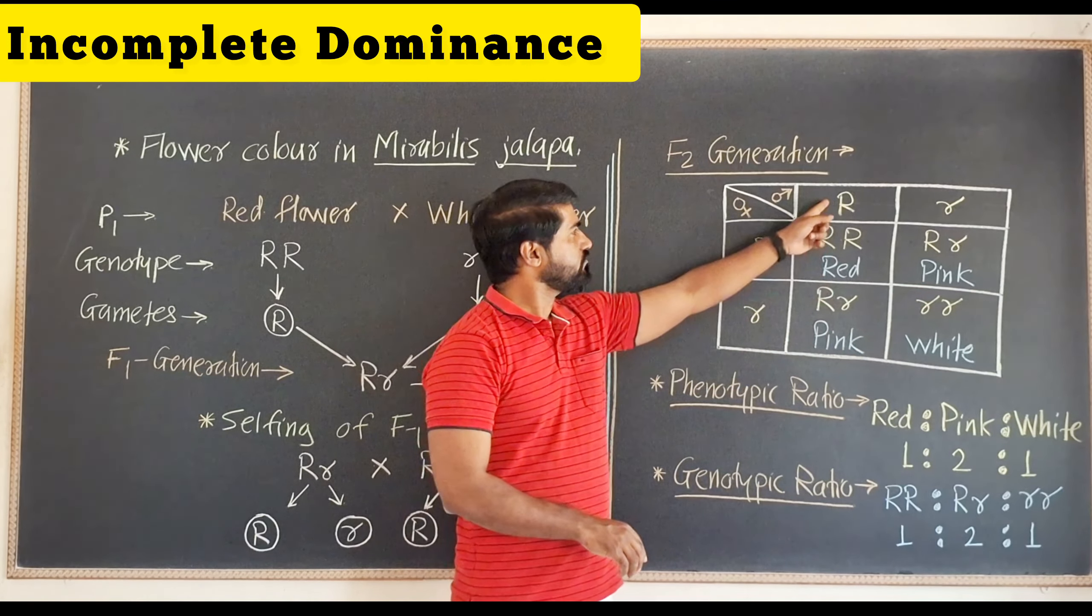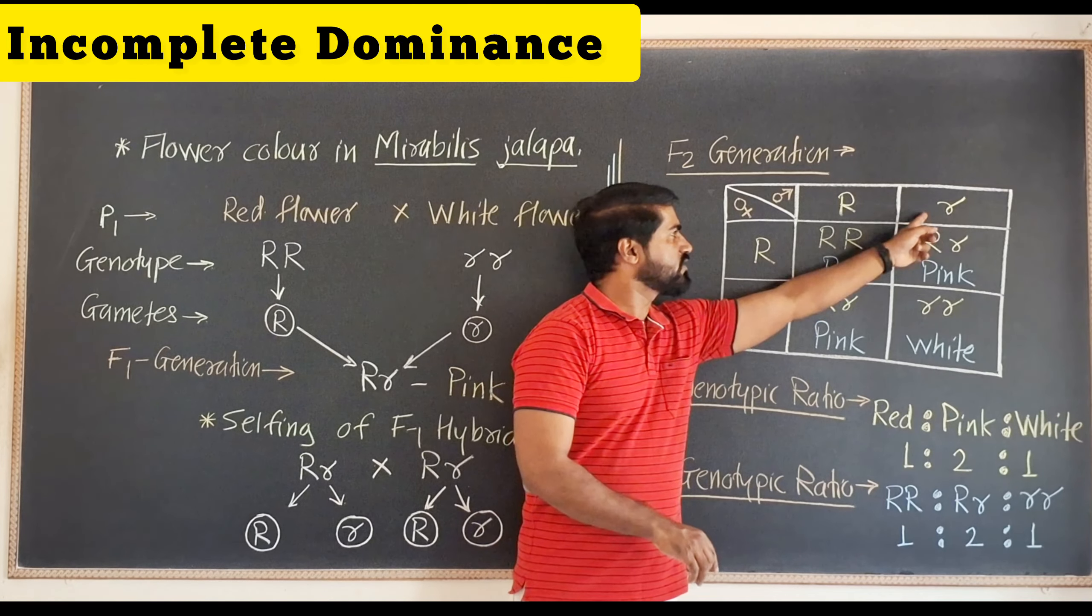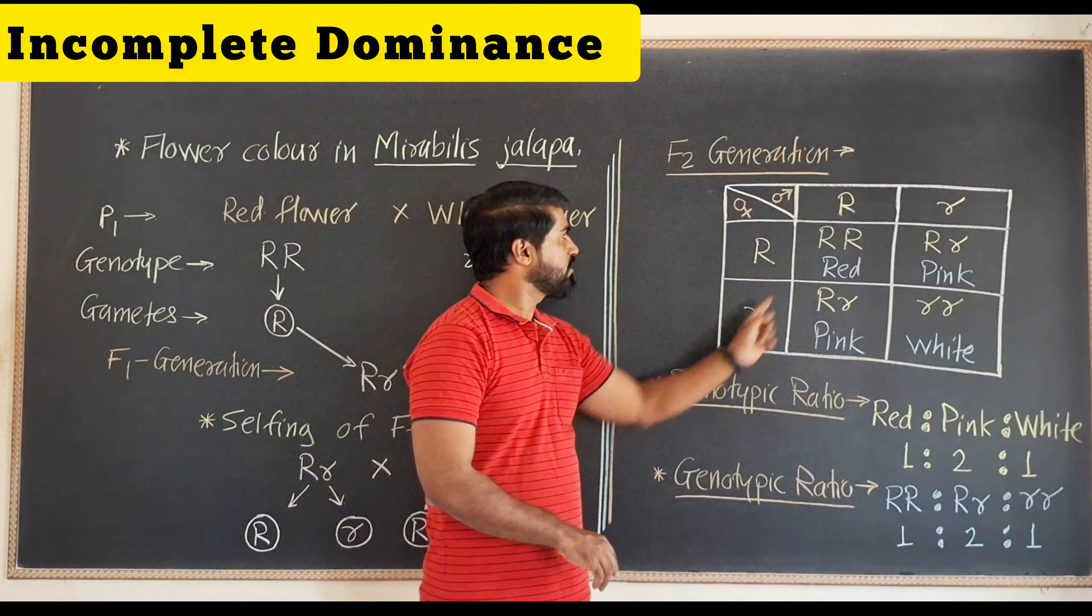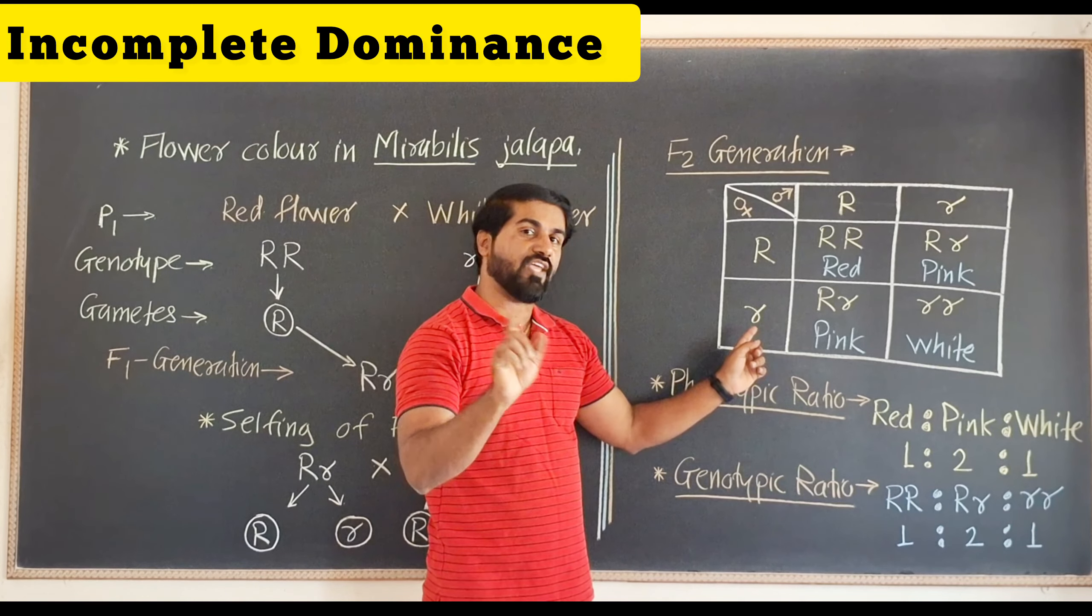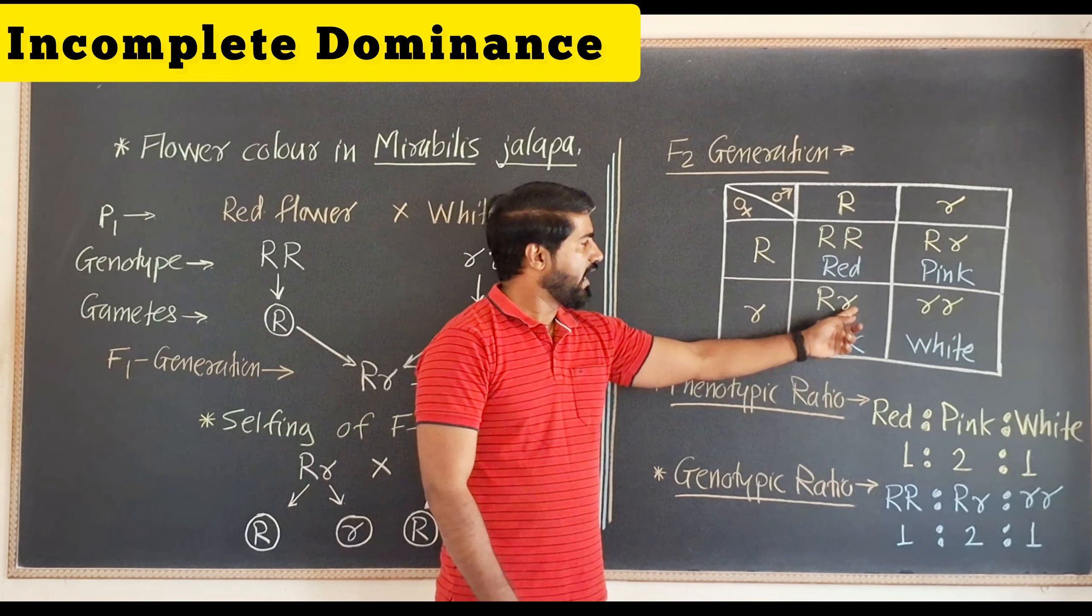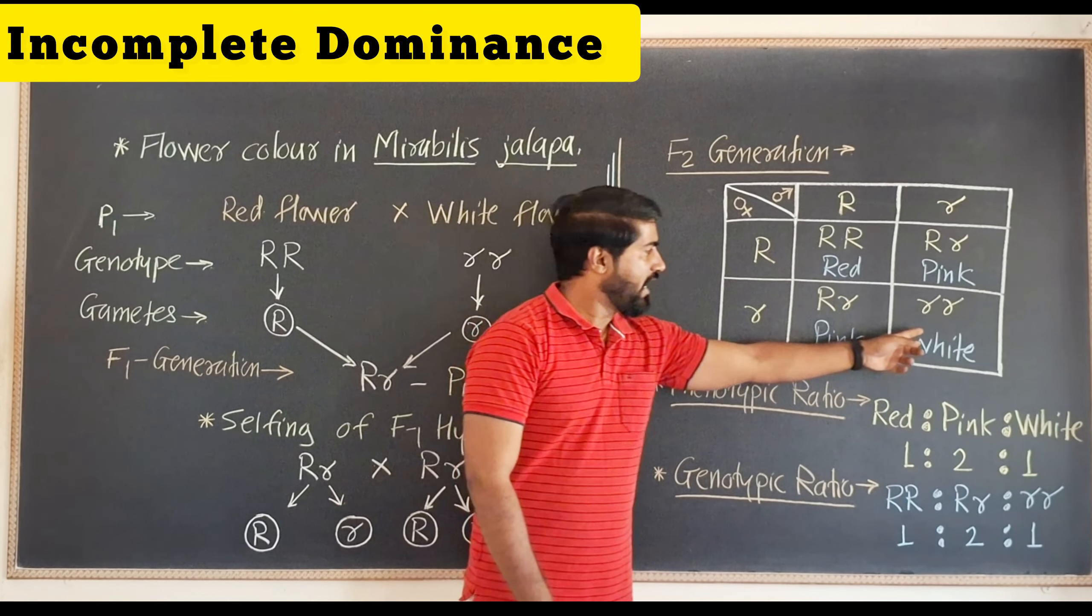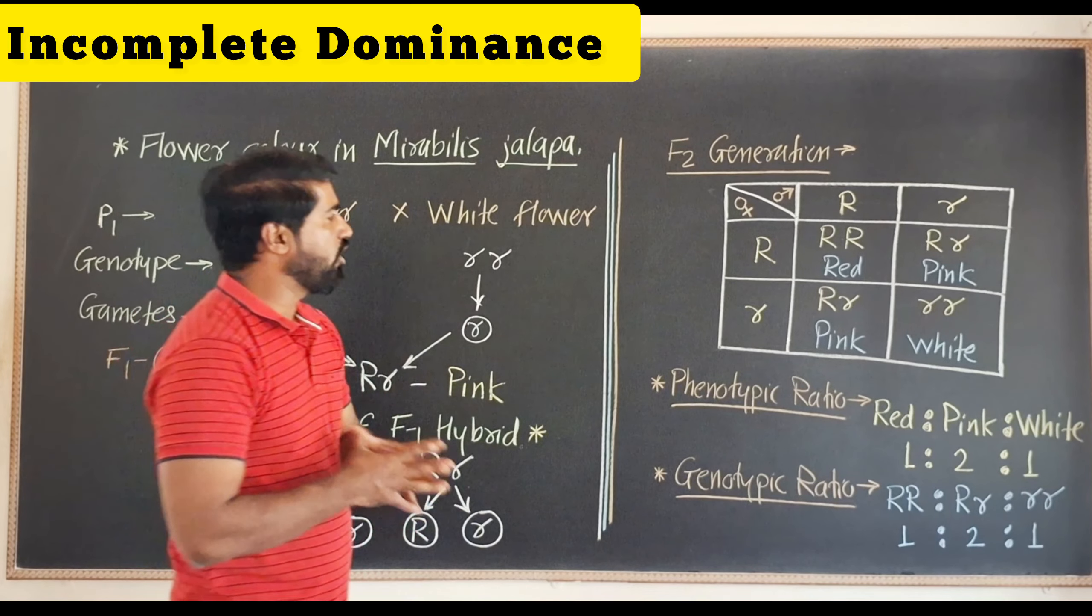If you cross it, capital R capital R. It is capital R and small r here. Here also capital R and small r. We are taking dominant first and then recessive, that means capital R will come first and then comes small r. And in last box it will be small r small r.